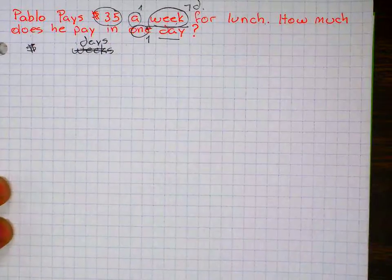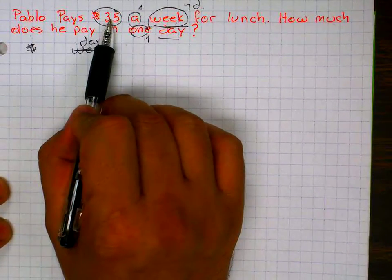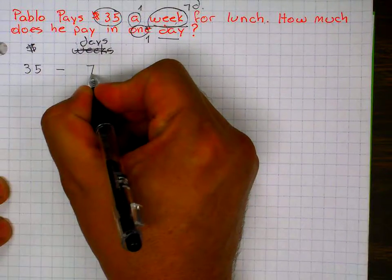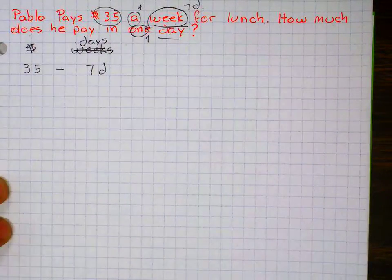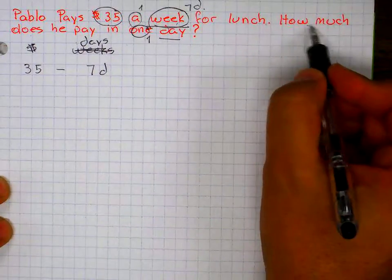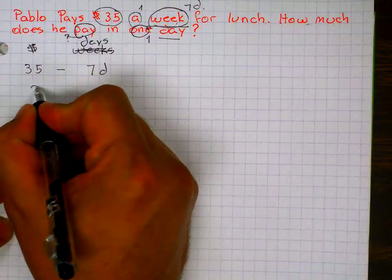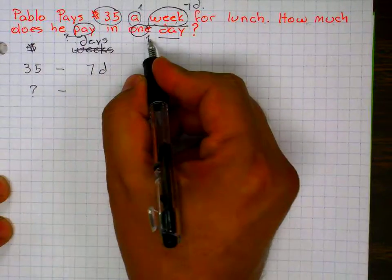So let's read it with days. Pablo pays $35 in seven days. So he pays seven days of lunch. And the question is, how much does he pay, that's my question mark, how much does he pay in one day?